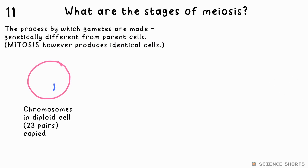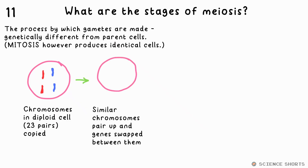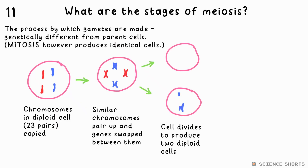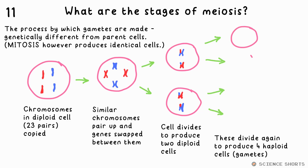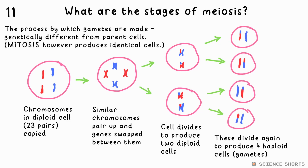Meiosis is how gametes are made. The chromosomes in a diploid cell are copied. Similar chromosomes pair up and genes are swapped between them. The cell then divides to produce two diploid cells, which then divide again to produce four genetically different haploid cells — your gametes.